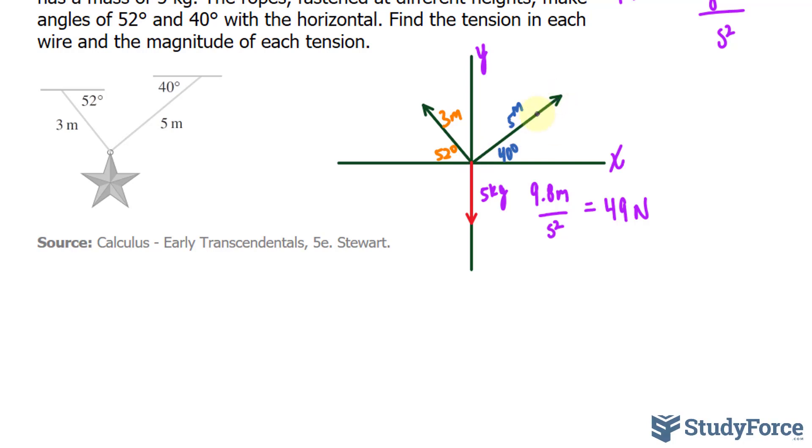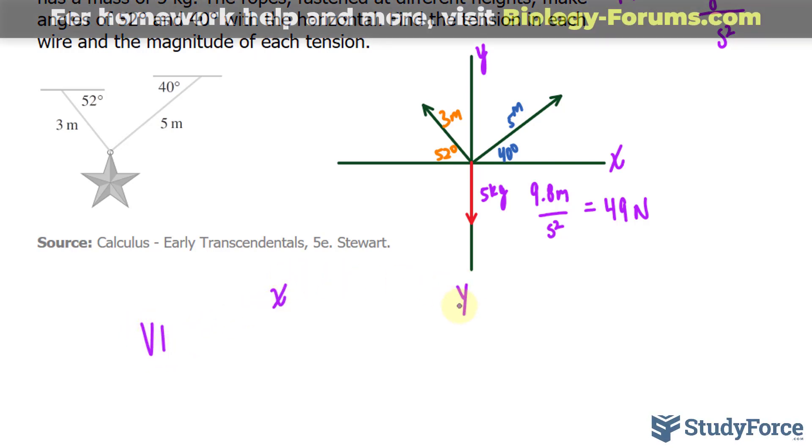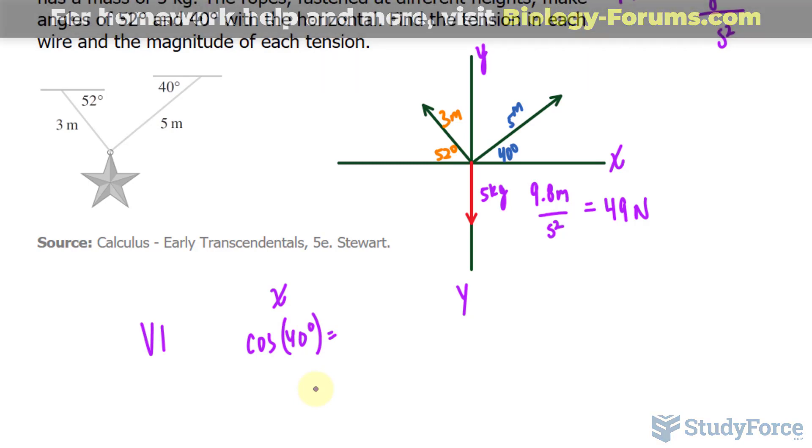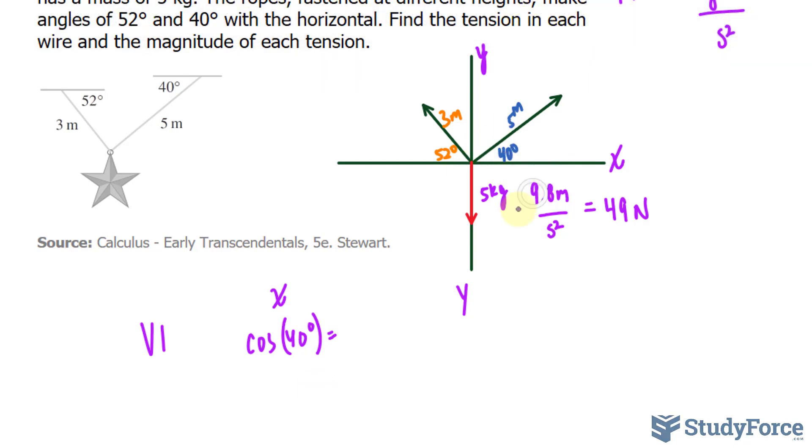Starting with the first wire, the x component of this vector will be right here, where I'm hovering over, along this horizontal. And using trigonometric functions, we would need the adjacent, and we're looking for the tension, which is the vector itself. Adjacent on hypotenuse is cosine. So the x component of vector 1, I'll make a little table here. Vector 1, x and y, the x component is cosine at 40 degrees, is equal to adjacent, which is the x component, over the magnitude of the tension, which I'll call T1.